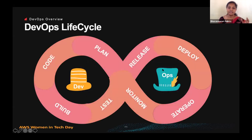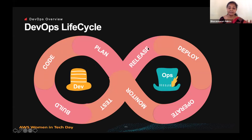Here's the DevOps lifecycle — how dev and ops work collaboratively. Right from initial planning, you code, build, test, and release packages periodically. The release gets deployed to the respective environment, and you operate and monitor. It's a continuous process that evolves and uses a wide variety of tools at each stage to meet our goals.